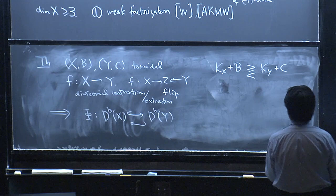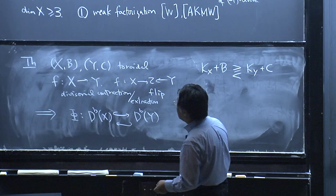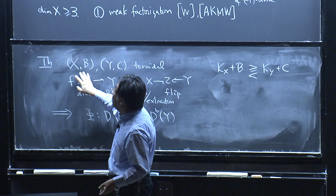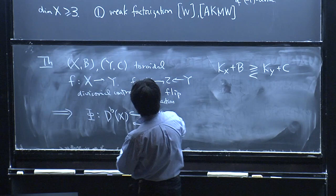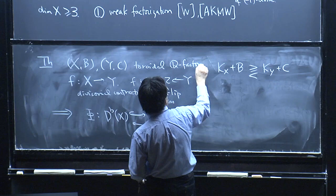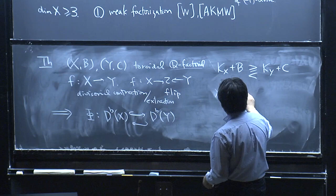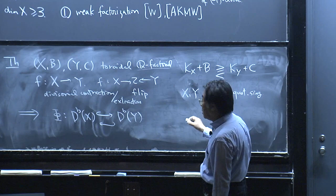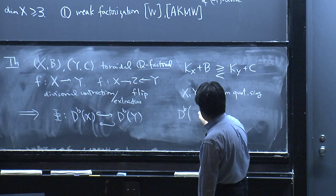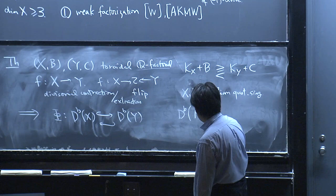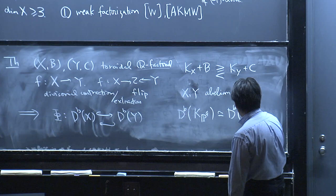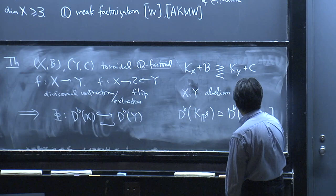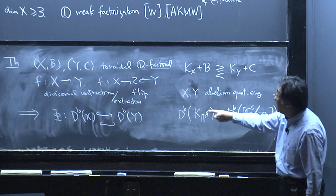X and Y are toroidal — locally toric — so they have toroidal singularities of quotient type: toroidal and Q-factorial. This is equivalent to saying X and Y have abelian quotient singularities. For example, in the last lecture of Jun Li, he considered K(P⁴), which is equivalent to D^b(C⁵/Z₅) because they are K-equivalent. This is a very particular case of this setting.